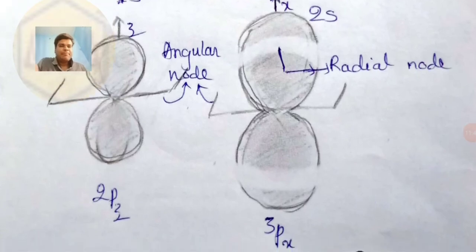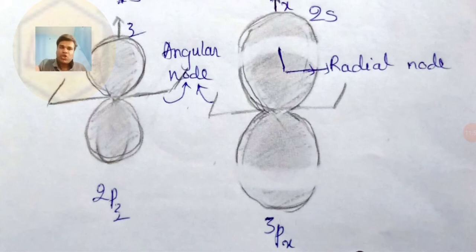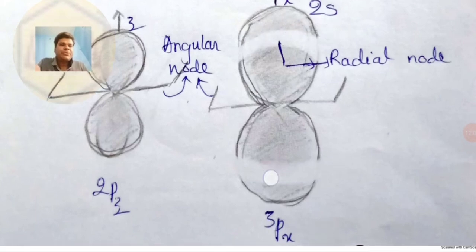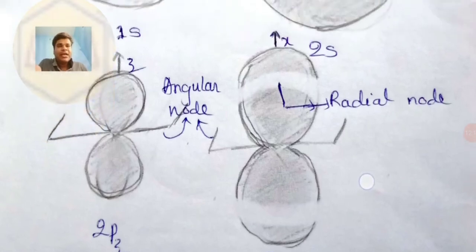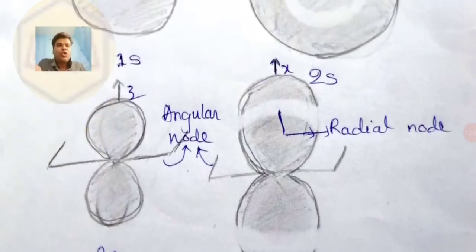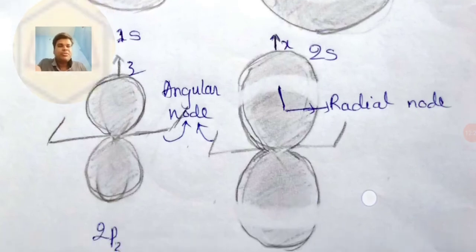Now consider 3p orbital. Comparing 2p and 3p: the higher principal quantum number means 3p is larger in size. It is still a p orbital so it has a dumbbell shape — here it is sketched larger. It can be 3px, 3py, or 3pz — three possibilities. For 3px the lobes are oriented along the x axis.